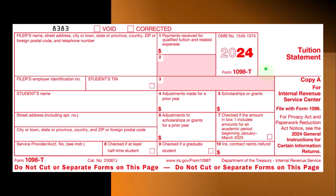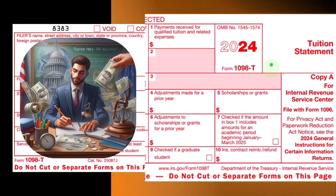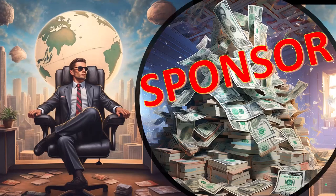The Form 1098-T, which you typically get from a financial institution, will indicate whether you can look into education tax benefits. The first and most beneficial credit to consider is the American Opportunity Credit.